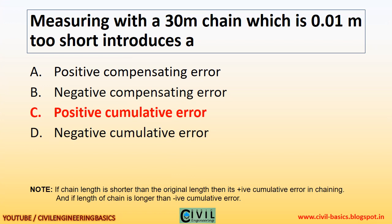Measuring with a 30-metre chain which is 0.01 metres too short introduces a positive cumulative error. If the chain length is shorter than the original length, then it is a positive cumulative error in chaining. And if the length of chain is longer, it gives a negative cumulative error.